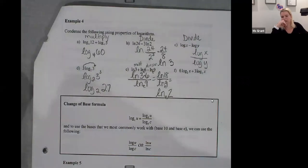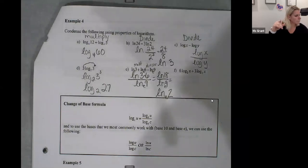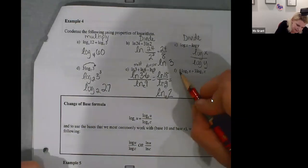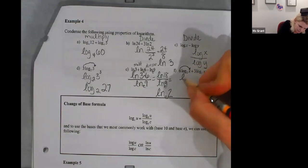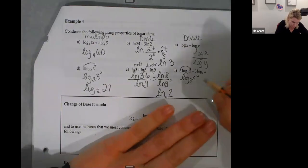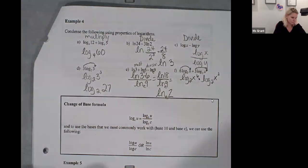F, the six is gonna go as the exponent of x. Log base two of x to the sixth. And the plus sign means it's a product property. The three is going to be the exponent on the x. Log base two of x cubed. Got it, and I just leave it like that.